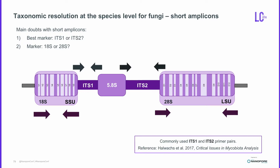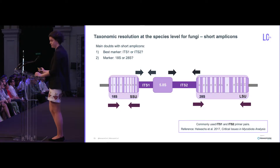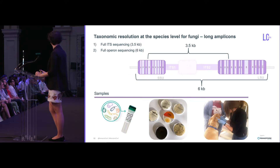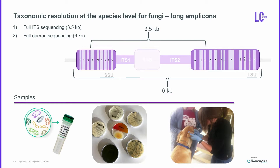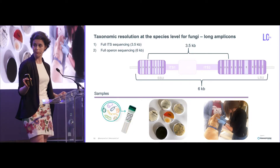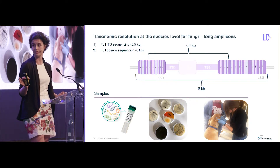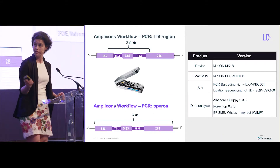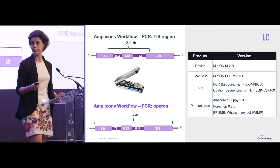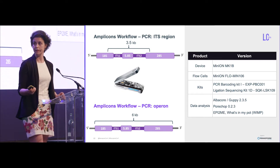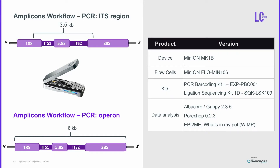With short reads we have a few possibilities, but with long reads we wanted to do a first approach with MinION and amplify 3.5 kb and 6 kb — the whole operon — to see if any difference could be detected. We started with three samples: one mock community standard, culture samples, and complex samples from dog skin. This is the workflow I used for both amplicon sizes, and the aim was to fast-detect the communities of fungi, so we used WIMP.